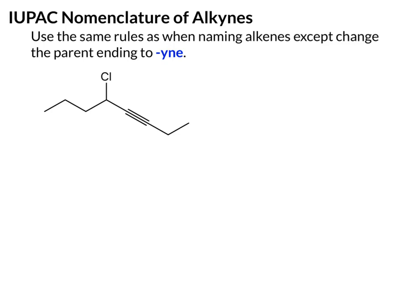Next, we'll talk about the IUPAC nomenclature system for alkynes. So if you already have a good handle on naming alkenes, alkynes should be quite easy because it follows the same rules. We just change the ending — instead of E-N-E, we use the Y-N-E ending to specify that it's an alkyne.